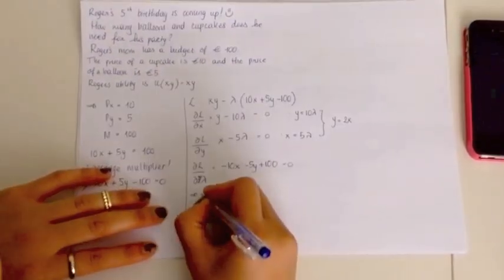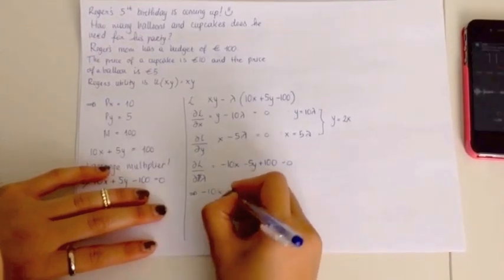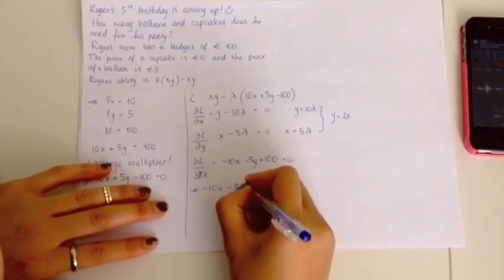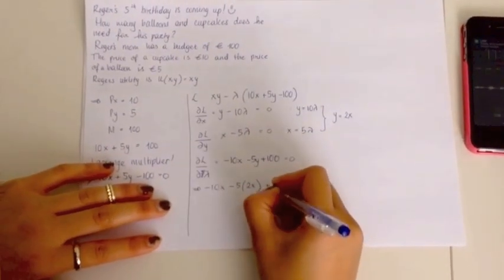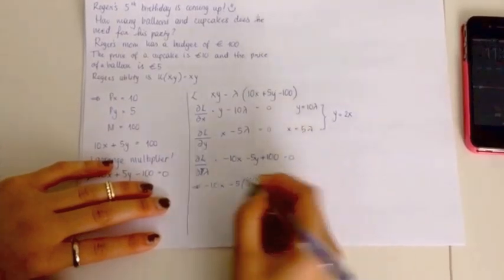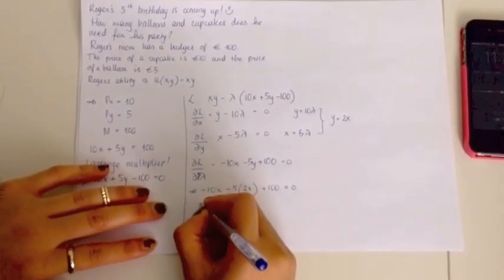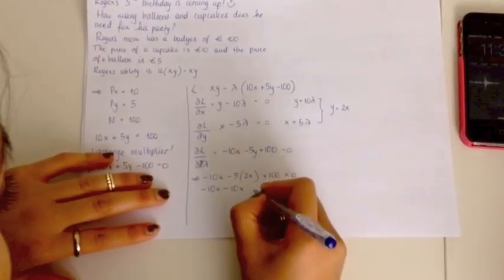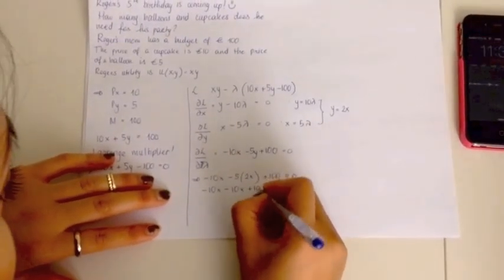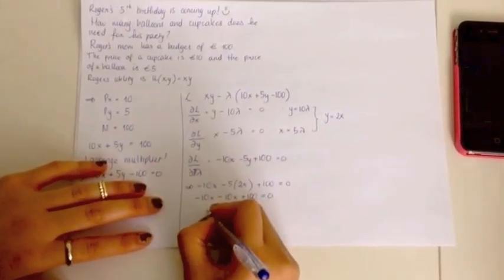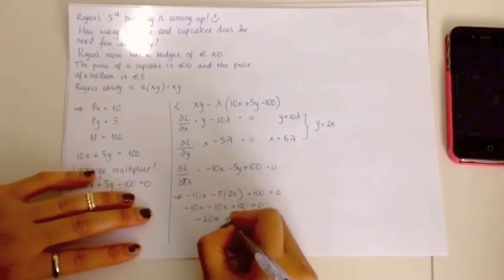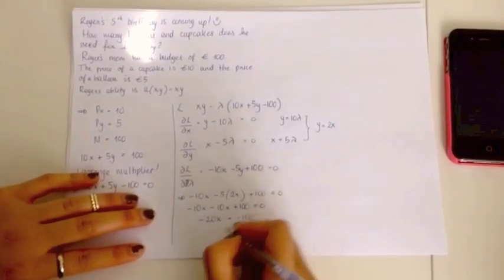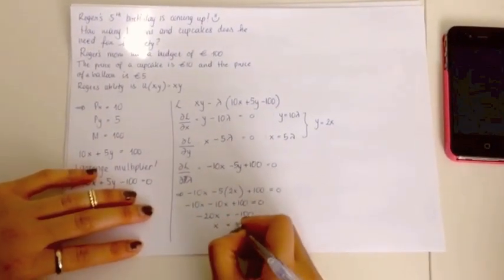So, then get minus 10X minus 5 times 2X plus 100 equals 0. And then, if we multiply that out, we get minus 10X minus 10X plus 100 equals 0. So, minus 20X equals minus 100. So, X equals 5.